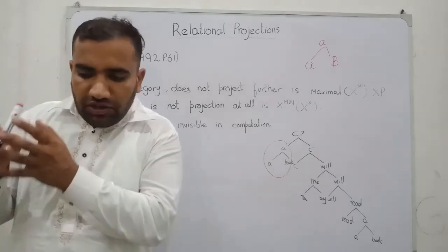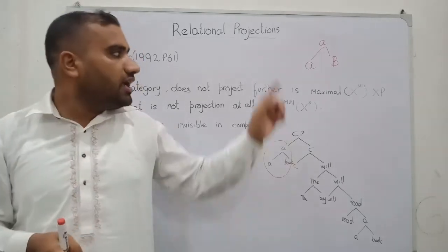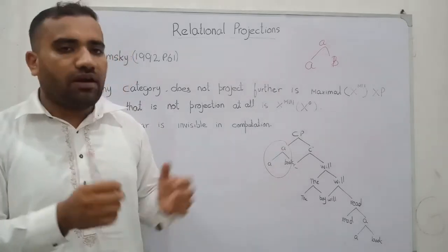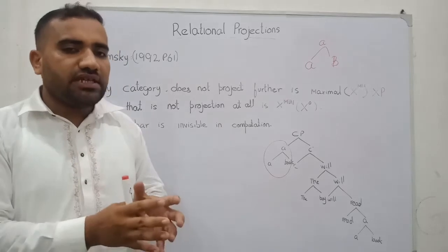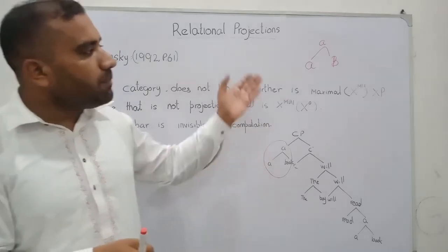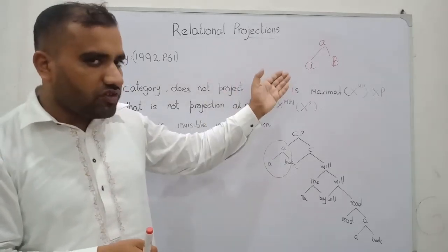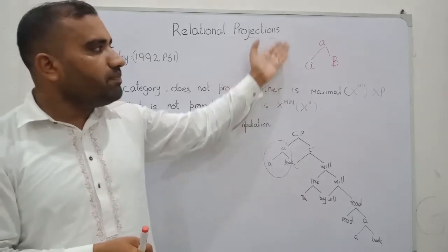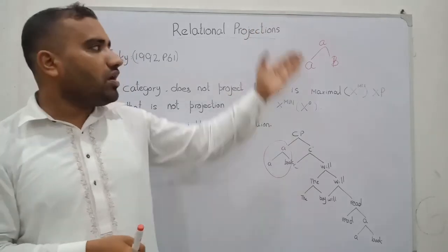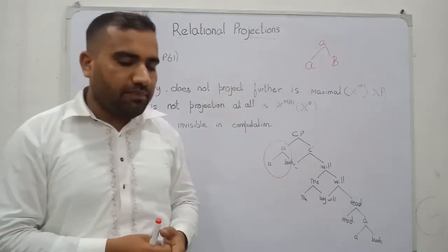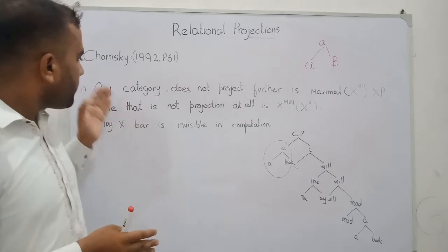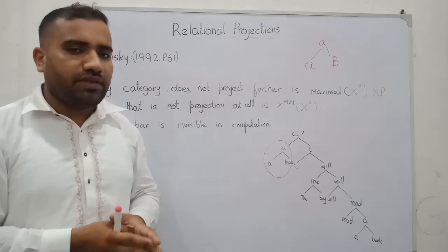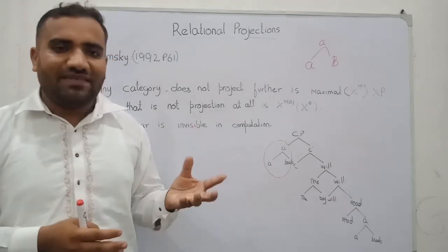Chomsky said that if we take one category alpha and another category beta — two distinct categories — and apply operation merge, by merging these categories we will make one label, called the alpha label. Chomsky also said that any category that cannot be further projected is called the maximal level.